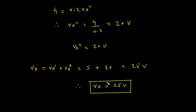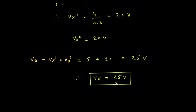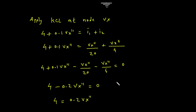We have now found both components of the voltage Vx. The final step is to add them together: Vx equals Vx prime plus Vx double prime. Substituting the values we calculated, Vx equals 5 plus 20. This gives us a final result of 25. Therefore, the voltage Vx in the circuit is 25 volts.